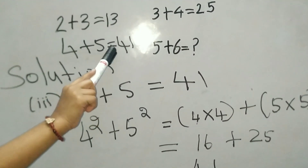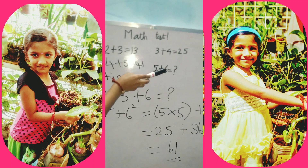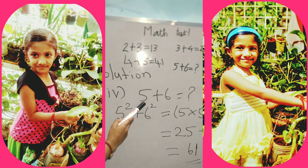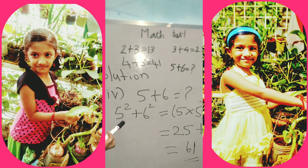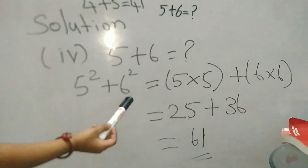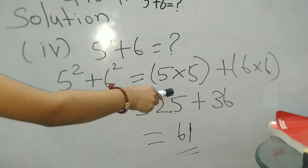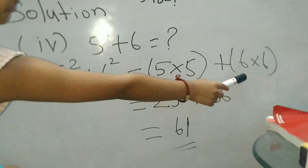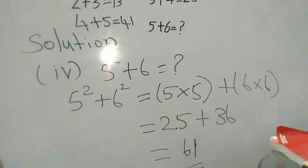We solved the third question. Now let's solve the fourth question, which is the last question. 5 plus 6 equal to what? 5 squared means 5 into 5. 6 squared means 6 into 6. 5 fives are 25. 6 sixes are 36. 25 plus 36 equal to 61.